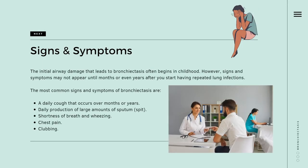Moving on to the signs and symptoms. The initial airway damage that leads to bronchiectasis often begins in childhood. However, signs and symptoms may not appear until months or even years after you start having repeated lung infections. The most common signs and symptoms of bronchiectasis are: a daily cough that occurs over months or years; daily production of large amounts of sputum, which you cough up and spit out, and may contain mucus, trapped particles, and pus; shortness of breath and wheezing; chest pain; and clubbing, when the flesh under your fingernails and toenails gets thicker.